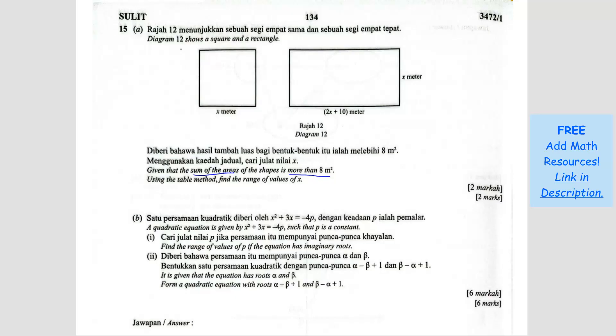So we have two areas here, A1 and A2. The sum of these two areas should be more than 8. So we just have to form that equation.